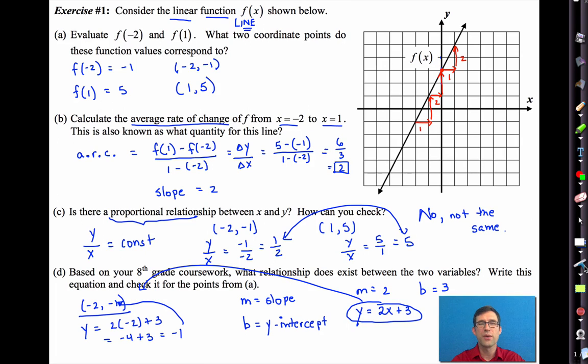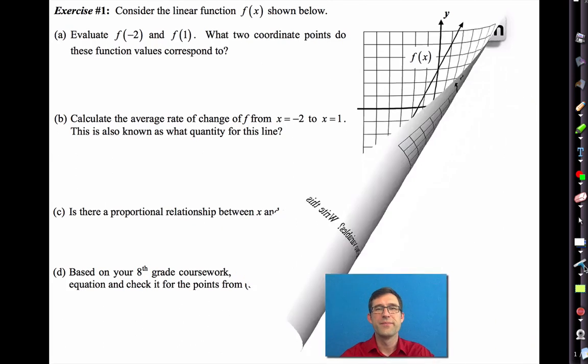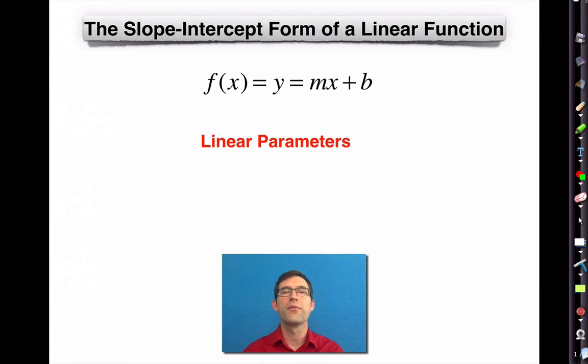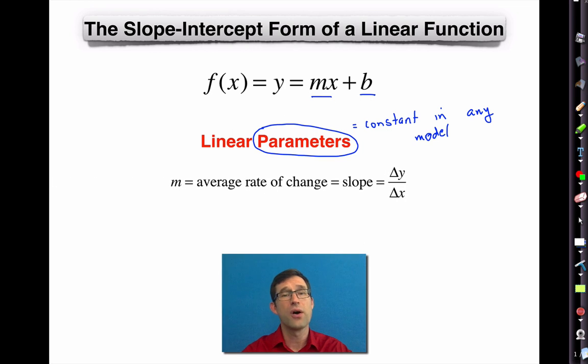We already know the slope. The slope is equal to 2. And the y-intercept is equal to 3. So this thing has the equation y equals 2x plus 3. Now I'm going to check this. Let's check the point negative 2, negative 1. By checking it, what I mean is that when I put in an input of negative 2, I'll get negative 4 plus 3, I get an output of negative 1. So this equation checked with that input-output pair.